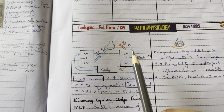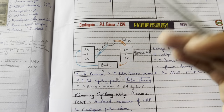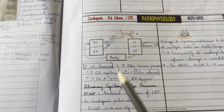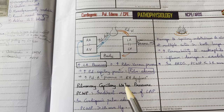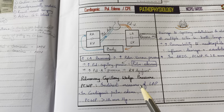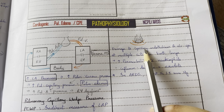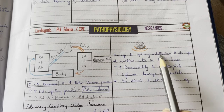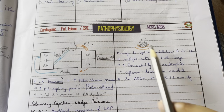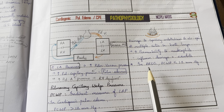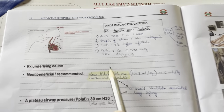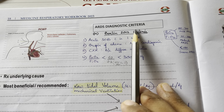In cardiogenic pulmonary edema, left atrial pressure increases (e.g., in severe mitral stenosis), and pulmonary capillary wedge pressure is greater than 18 mmHg. In ARDS, there is damage to capillary endothelium and alveolar epithelium at multiple sites with increased permeability to neutrophils, inflammatory damage, and exudate. Pulmonary capillary wedge pressure in ARDS is less than 18 mmHg.